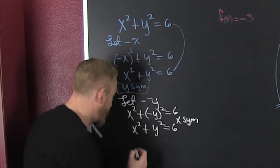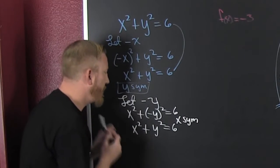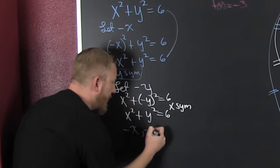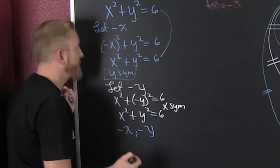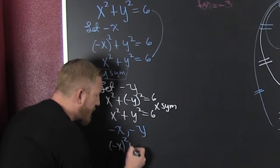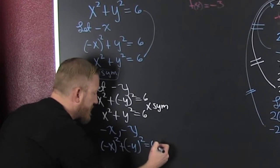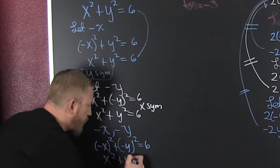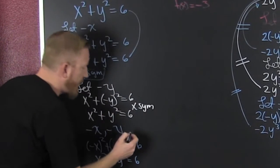To check origin symmetry, we let negative x and negative y. Substituting gives negative x squared plus negative y squared equals six, which is still x squared plus y squared equals six. So this equation has all three symmetries — x-axis, y-axis, and origin.